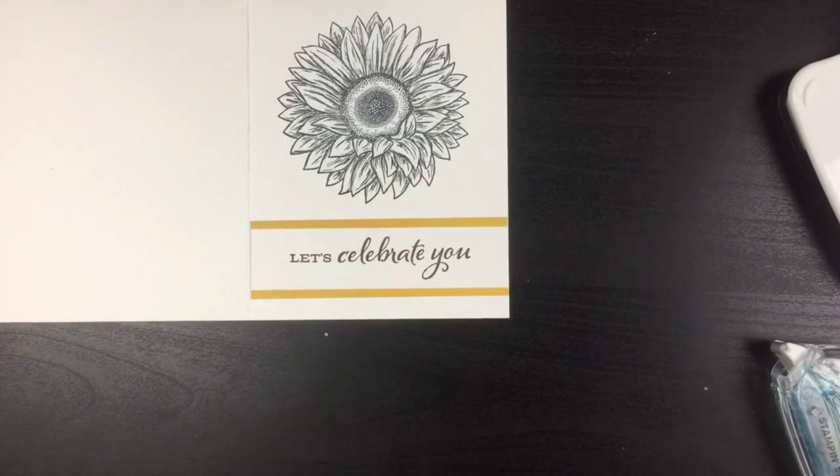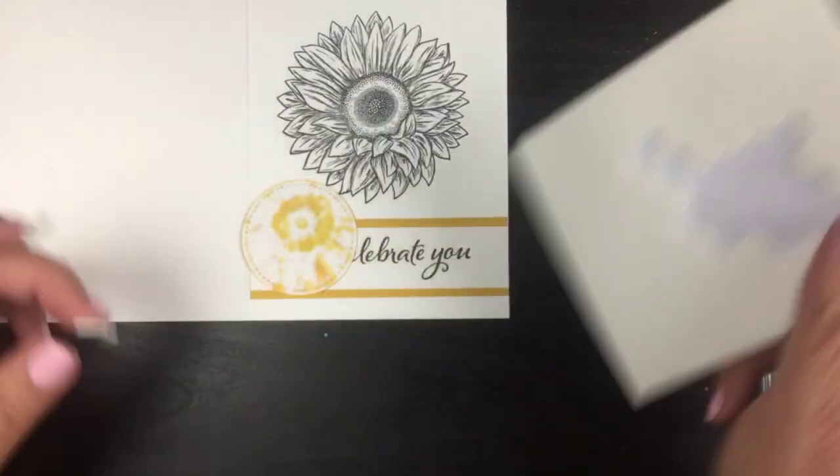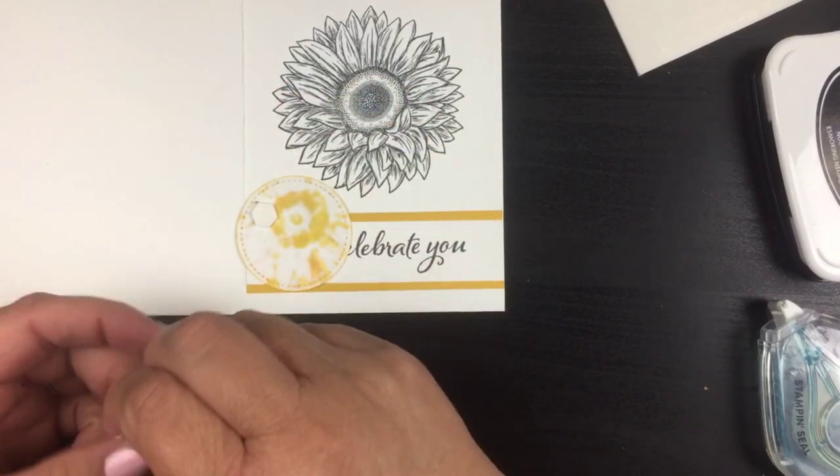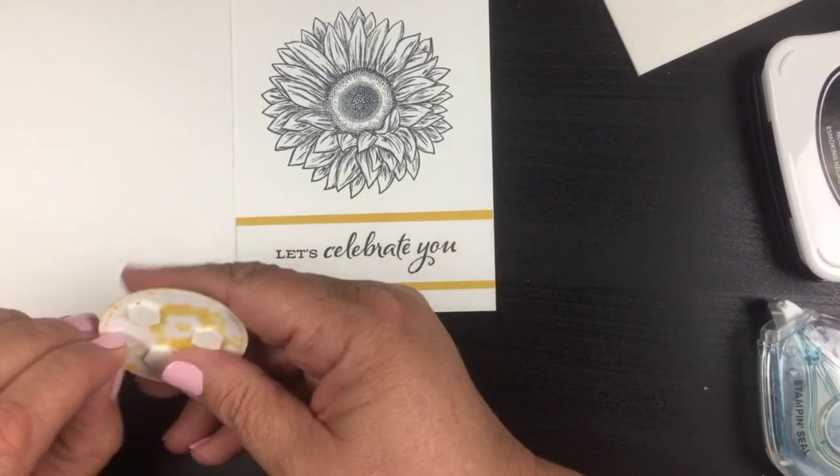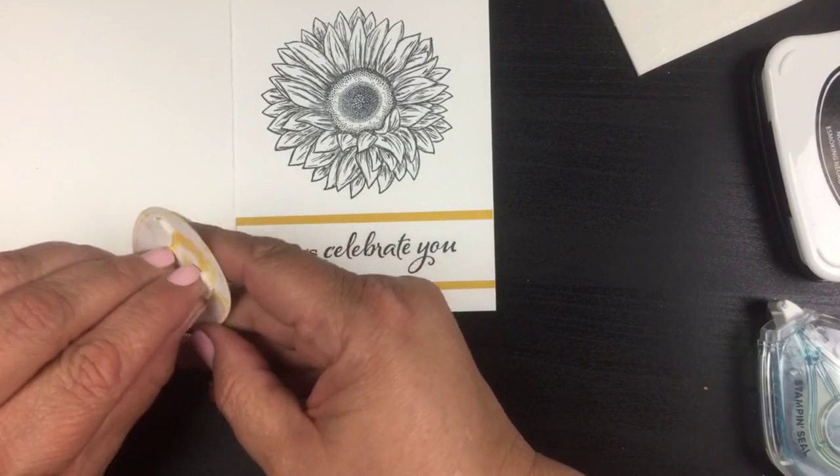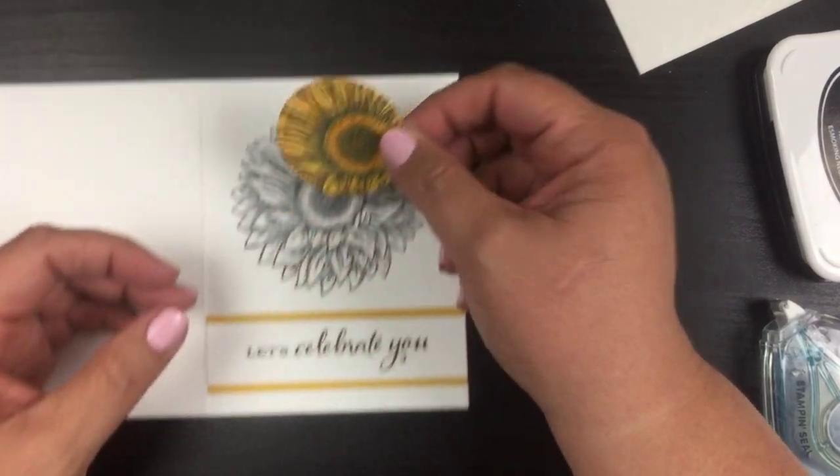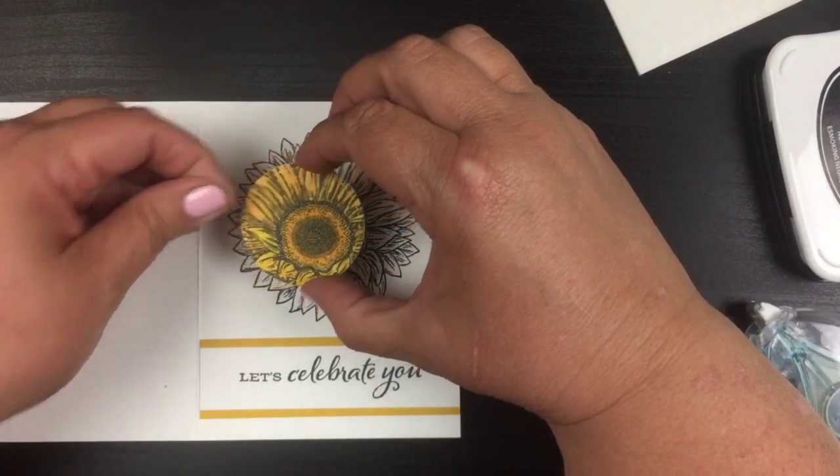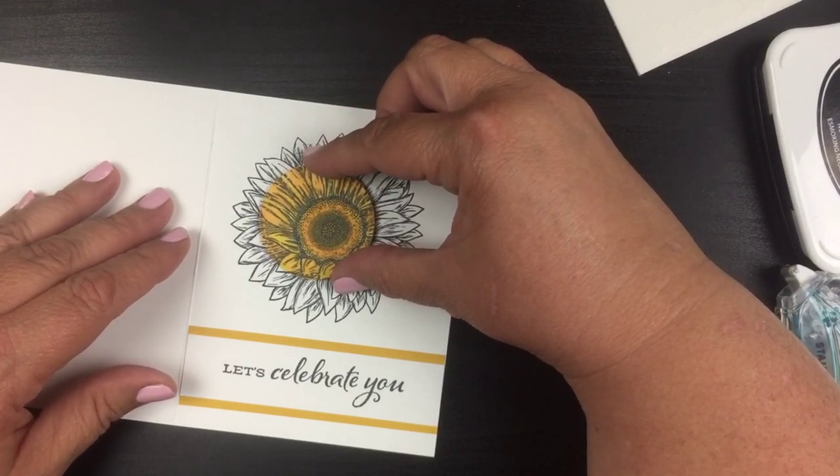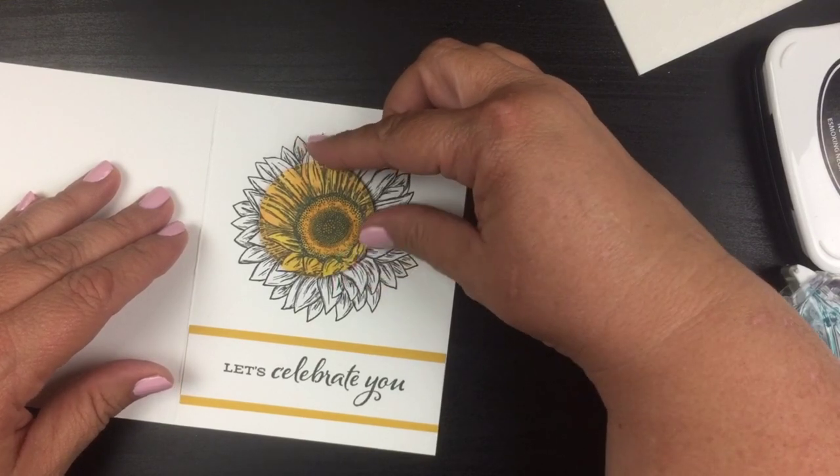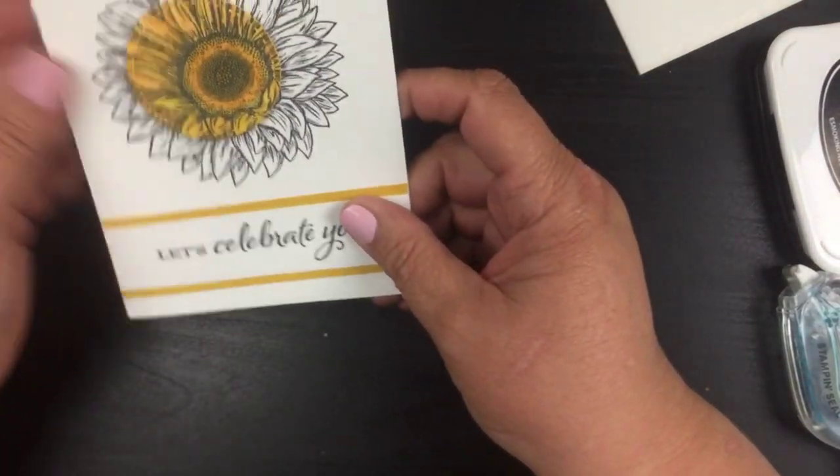I'm gonna get some little stamping dimensionals. We're gonna put those on the back, just a few. Now we're going to find that area that matches up perfectly. And you'll see that now you've got that beautiful spotlight. Isn't that pretty?